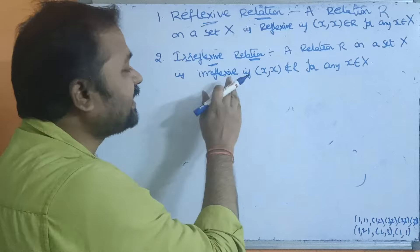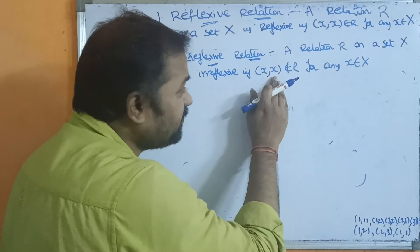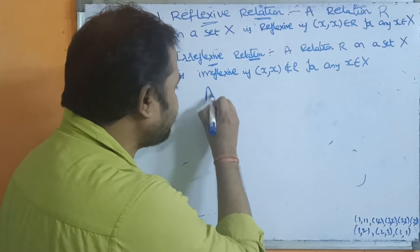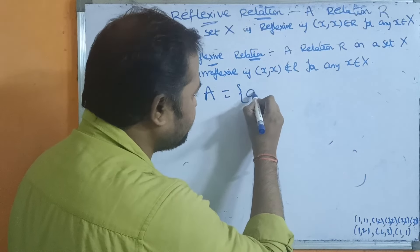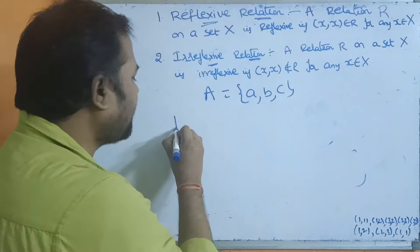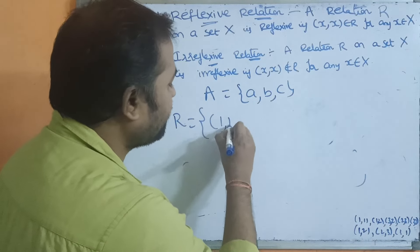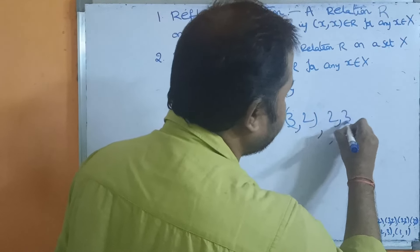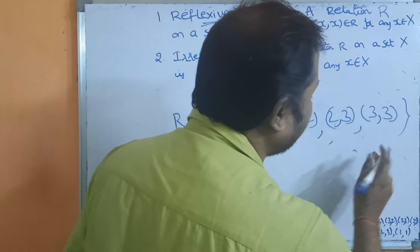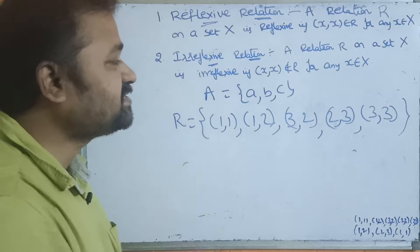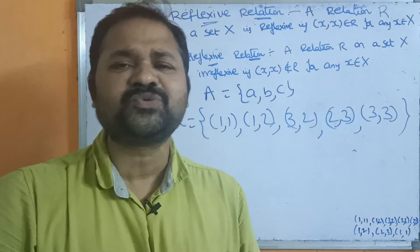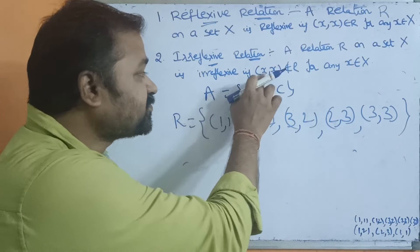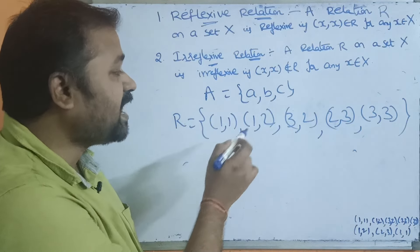Now let us see the second type: irreflexive relation. A relation R on a set X is irreflexive if (x, x) does NOT belong to R for any x belonging to X. Let the set be represented by capital A with elements a, b, c. We take a relation and check the irreflexive condition.